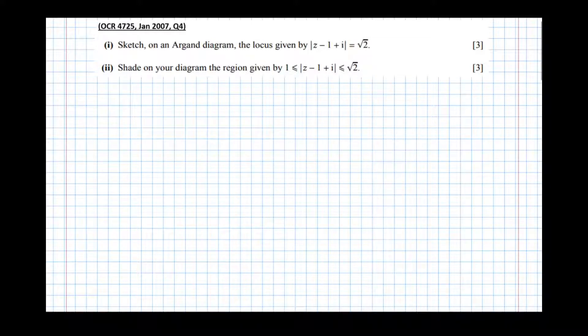In this video we're going to have a look at how to do an exam question involving loci on the Argand diagram. Part one asks us to sketch on the Argand diagram the locus given by |z - 1 + i| = √2.